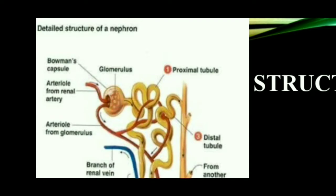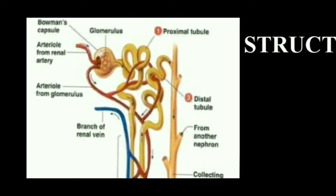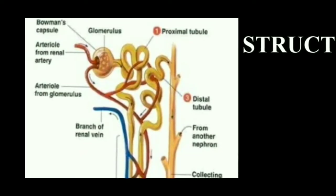This cup-shaped structure is called Bowman's capsule. The Bowman's capsule is covered by a layer of squamous epithelium. Squamous epithelium is a type of epithelial cells — a very thin single layer of cells covering the Bowman's capsule. It is also called podocytes. These epithelial cells contain minute pores so that they are helpful in the filtration process.